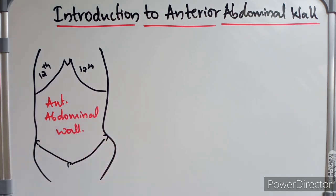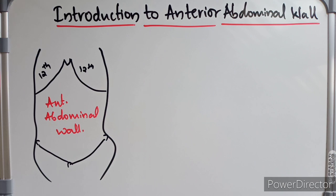Why do we need to study the anterior abdominal wall? Because physical examination of the abdomen is mostly performed through the anterior abdominal wall. We also access the abdomen and its contents for surgery through incisions in the anterior abdominal wall, and abdominal hernias mostly occur through it as well.